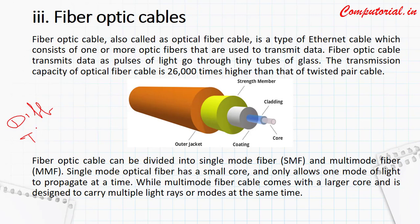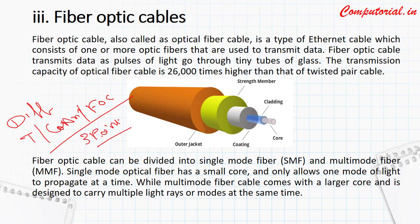You have to write the difference between twisted pair cables, coaxial cables, and fiber optic cables — at least three points listing all the differences.